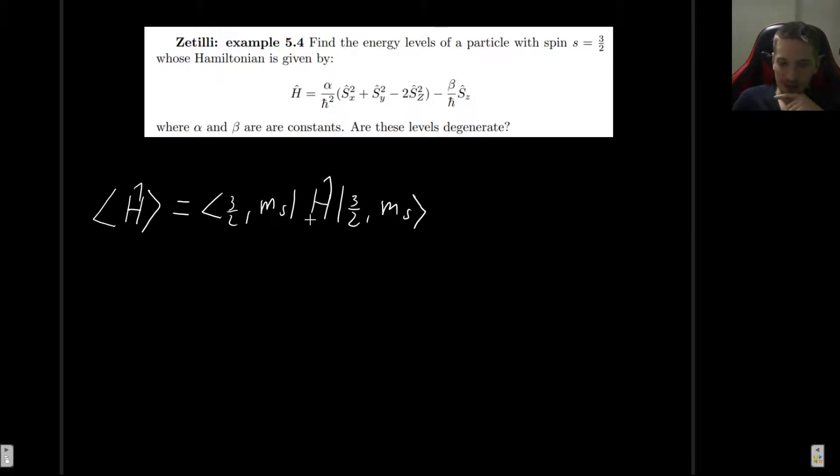So first of all, obviously, let's begin with this Hamiltonian operator and see how it acts on this ket. So our Hamiltonian operator is alpha over h-bar squared, and let's just begin working with this operator a little bit, times s_x operator squared plus s_y operator squared minus 2 s_z operator squared minus beta h-bar s_z operator. Now, first of all, remember, we know the effects of s_z and s squared,